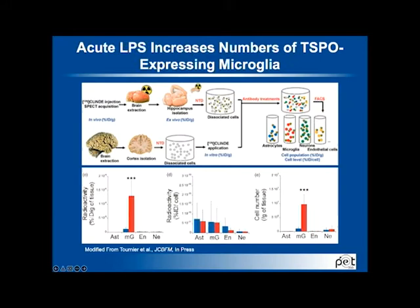We still think the TSPO increase is probably localized to microglia. This is supported by excellent ex vivo work from a lab in Switzerland that injected a radiotracer and used cell-sorting techniques to identify cellular sources of change after different challenges. They demonstrated that in the context of a TSPO challenge in rodents, the increase in activity corresponds completely to microglia. More nuancedly, it appears to be an increase in the number of microglia expressing TSPO — microglia proliferation — rather than just microglial activation per se.